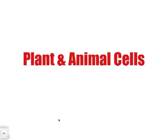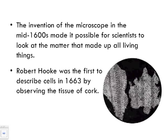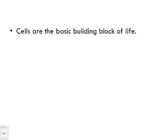In this lesson we're going to look at comparing plant and animal cells. The invention of the microscope in the mid-1600s made it possible for scientists to look at the matter that made up all living things. Robert Hooke was one of the first to describe what a cell actually was, back in the 1600s, by observing tissue samples as shown in this photo.